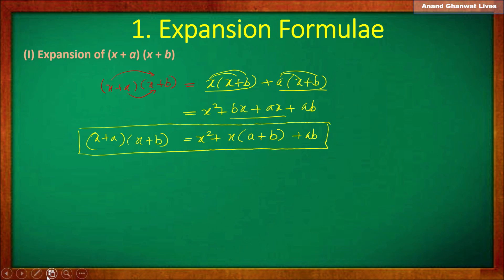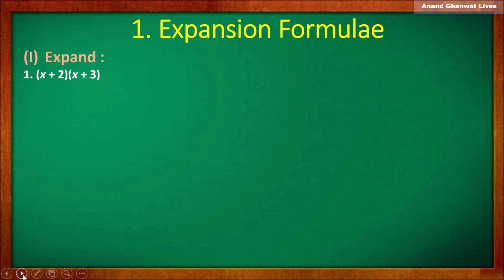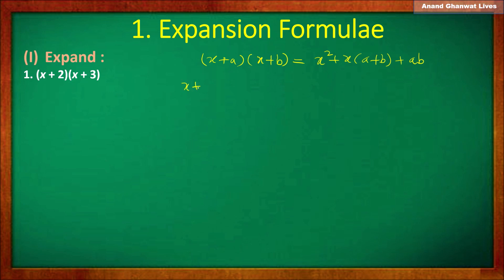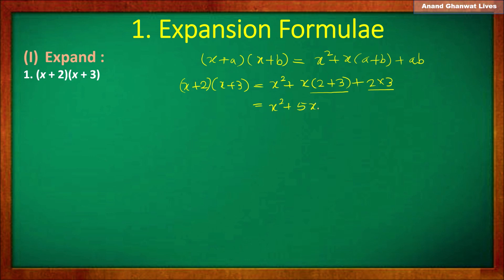Remember this formula and let us solve some examples. First example: (x + 2)(x + 3). Using the formula, this equals x² + x(a + b) + ab, which is x² + x(2 + 3) + 2×3. Completing the addition and multiplication: x² + 5x + 6. That is the answer to the first question.